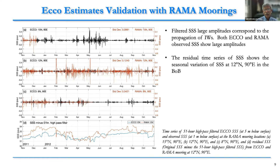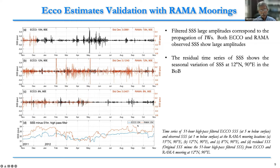Before this work, we compared the ECHO estimates with RAMA moorings. You can see RAMA moorings at 15°N, 12°N, and 8°N — there is a good comparison, though in the RAMA moorings you see a lot of fluctuations. Overall, both agree well. The bottom panel shows the comparison at 12°N between ECHO and the RAMA moorings.